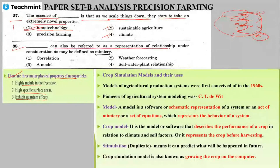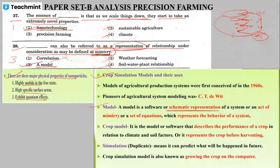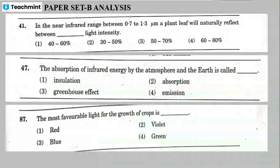Question 38: blank can also be referred to as a representation of a relationship under consideration, which may be defined as a schematic representation or mimicry. The correct answer is option number 3 — model. A model is a schematic representation, an act of mimicry, or a set of equations which represents the behavior of a system.